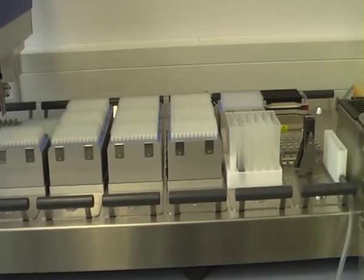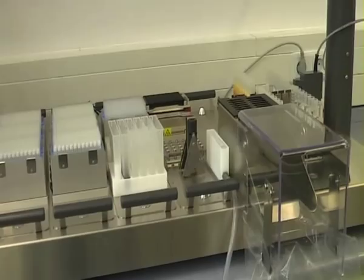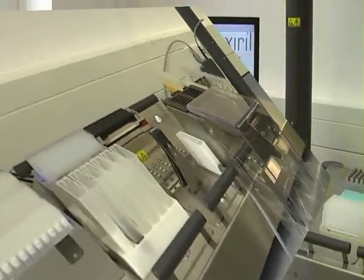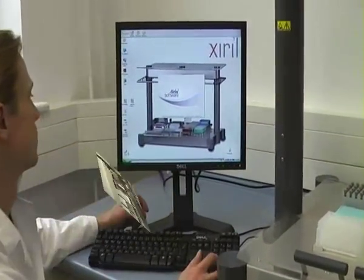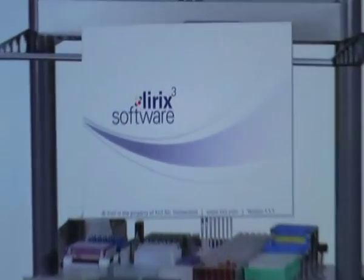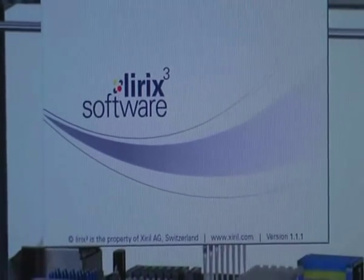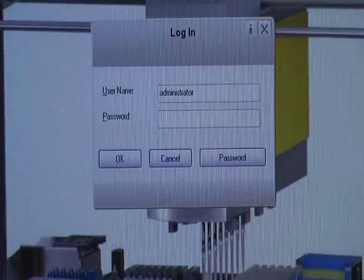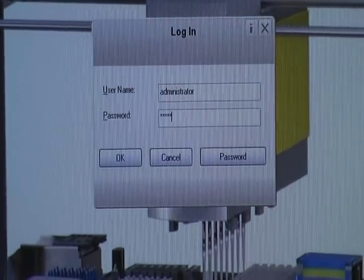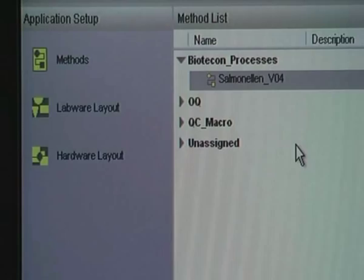The automation protocol starts after the food samples have been enriched, usually for 18 to 20 hours. No subcultivation is necessary. The user must first initialize the corresponding Lyric software. After logging in, the Salmonella protocol is chosen from the method list.